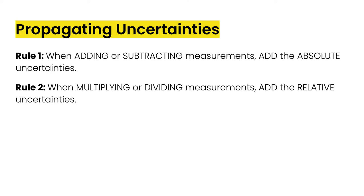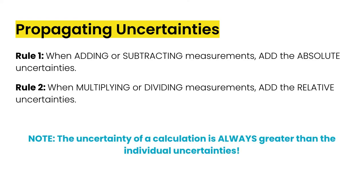Our second rule is when we're multiplying or dividing measurements, we add the relative uncertainties. So the difference is whether we're adding absolute or we're adding relative uncertainties. And that depends on the type of calculation we are doing. Please note that the uncertainty of a calculation is always going to be bigger than individual uncertainties because you are adding them together.